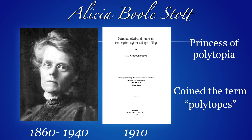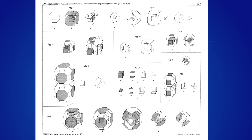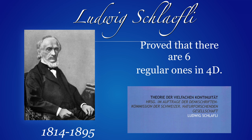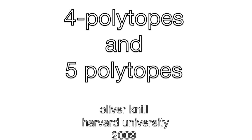Alicia Boole Stott coined the term polytopes and was one of the first to investigate them mathematically. She is also called the Princess of Polytopia. Here is a page from her article of 1910 and another page. Like others, Boole Stott really was nicely illustrating the mathematics with pictures. Ludwig Schläfli proved that there are exactly six regular polytopes in four dimensions and three in higher dimensions. Here is an animation made in 2009 about all these four-dimensional and five-dimensional polytopes, which you can find on YouTube.